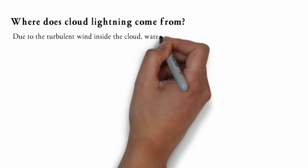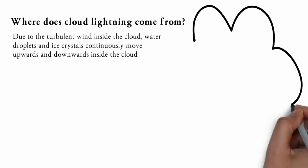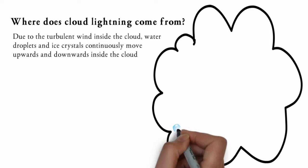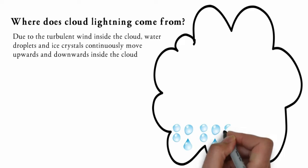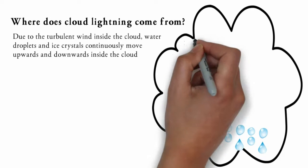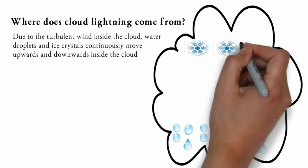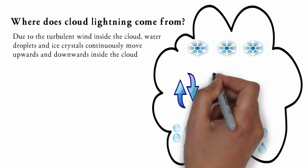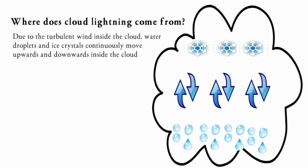The wind inside the cloud carries the less cool water droplets higher into the cloud, where temperature is much lower, causing these water droplets to convert into ice crystals. Similarly, wind also carries ice crystals from the top of the cloud to the bottom.